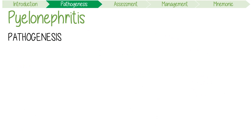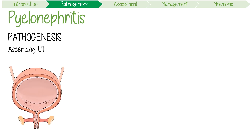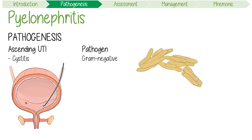The actual pathogenesis of pyelonephritis is pretty simple. It often develops as a result of an ascending urinary tract infection that progresses from simple cystitis. You must remember that the major causative pathogens are gram-negative bacteria, with E. coli causing approximately 80% of infections.